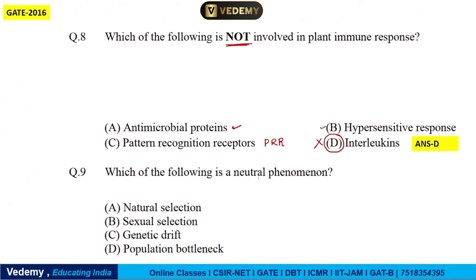Next: which of the following is a neutral phenomenon? Natural selection is a drastic change, not neutral. Sexual selection also causes change, so it is not neutral. Next is Genetic Drift and Population Bottleneck. For natural selection and sexual selection, we are sure these are not neutral phenomena. But for Genetic Drift, we know from neutral theory studies that it can be neutral.